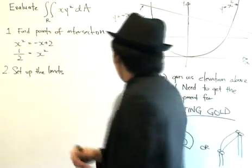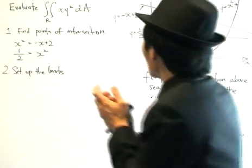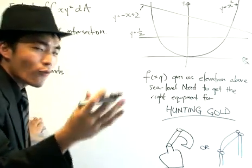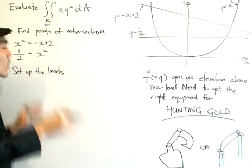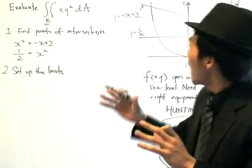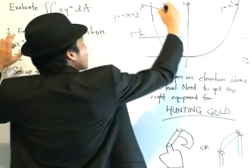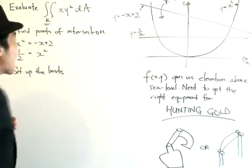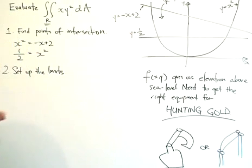Basically, if the function gives us the elevation at a certain point, the double integral will give us the sum of all the elevations — whether it's positive, meaning mountains, or negative, meaning caves. Region R is very important. We always want to find the limits for region R. The region is quite complicated, but with our normal methods we should be able to find the limits.